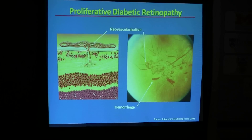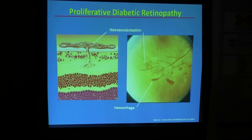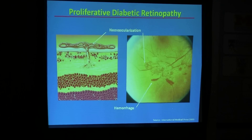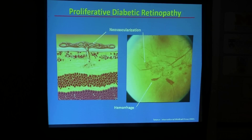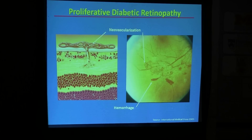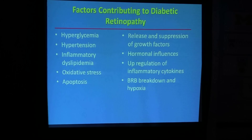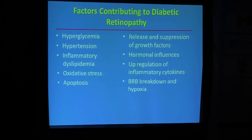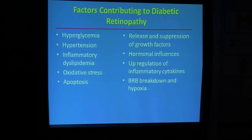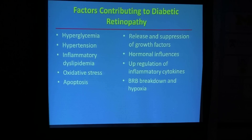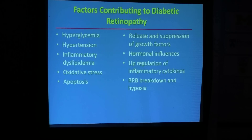There is a lot of research ongoing in this area, also because people who are diabetic may be prone to cardiovascular disease. The factors contributing to diabetic retinopathy include hyperglycemia, hypertension, inflammation, dyslipidemia, oxidative stress, apoptosis, release and suppression of growth factors, hormonal influences, and inflammatory cytokines — which we will also see in my study.